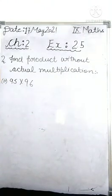Here is the second part of question number 2: find product without actual multiplication. This means you have to find the product using identities.